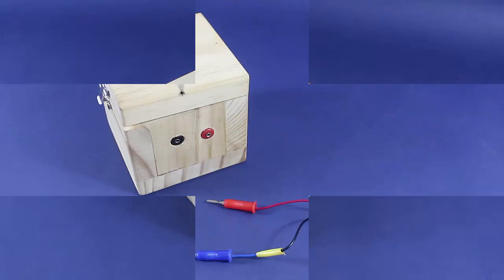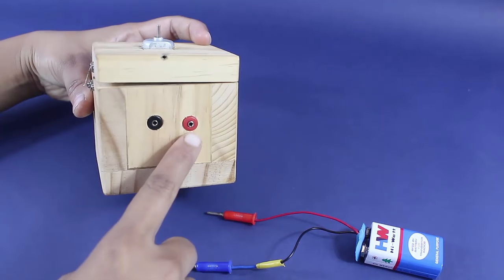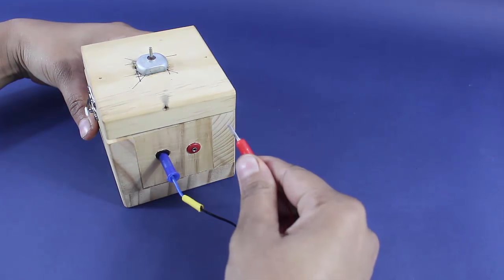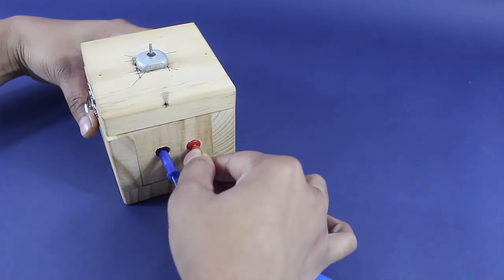This is the lid of the box. Two wires connect the motor terminals to the battery. The motor spins when connected to the battery.